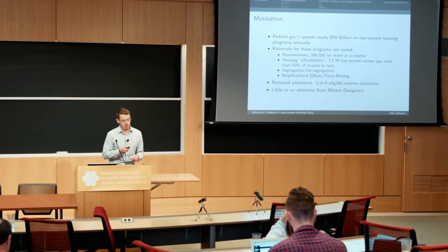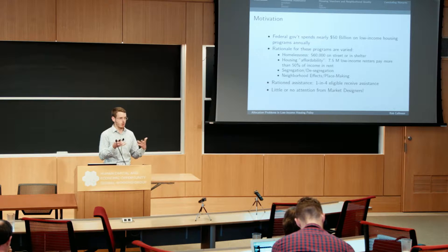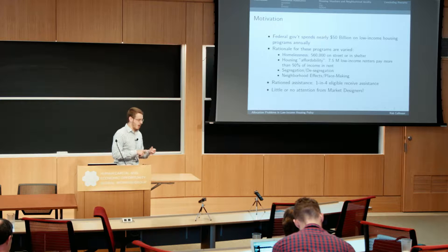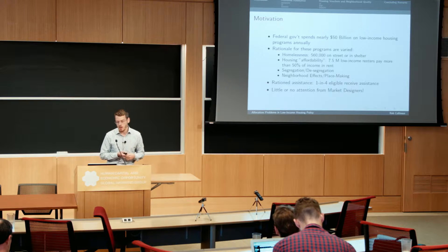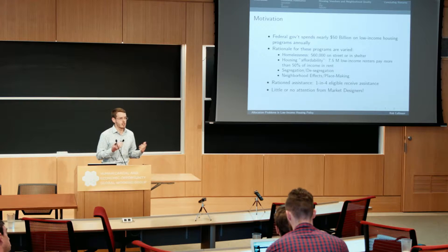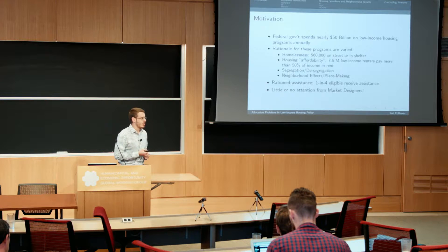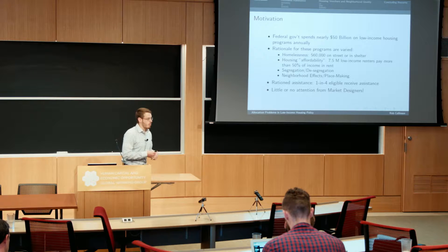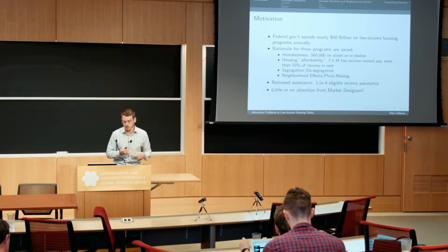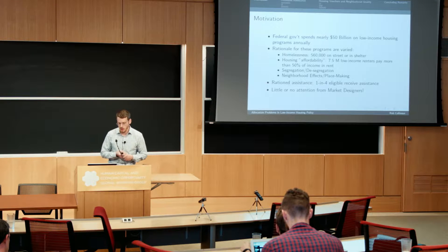Low income housing programs operate with a variety of rationales. In a moment of self-promotion, I have a chapter with Jens Ludwig and Ingrid Allen where we talk about these various rationales and their historical roots. Basically, housing programs are designed to address homelessness — we have about a half million homeless enumerated each January. They address housing affordability, meaning people spending a large fraction of their income on rent. There are also connections to both segregation and desegregation, and some programs are focused on neighborhood effects, making place, and investing in distressed communities.